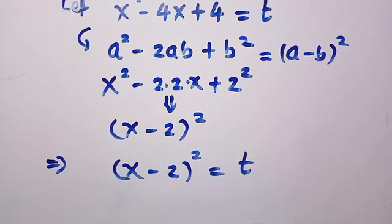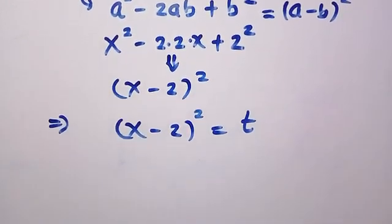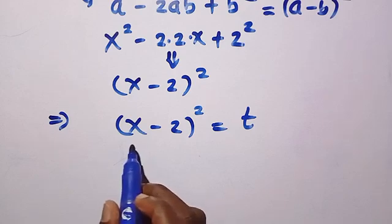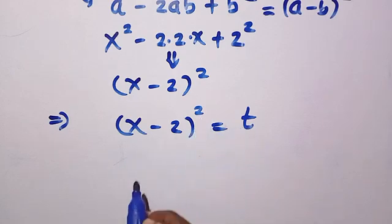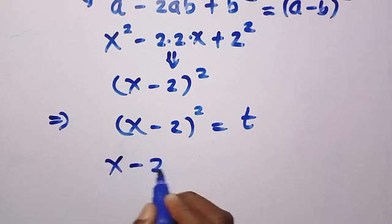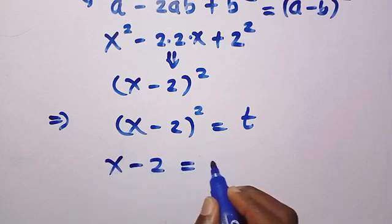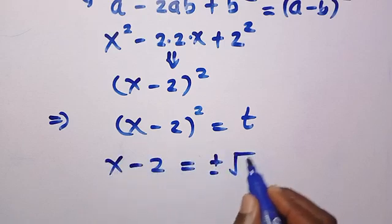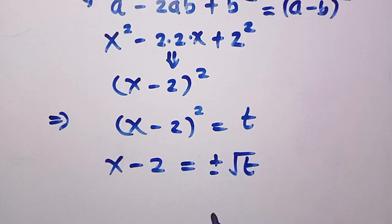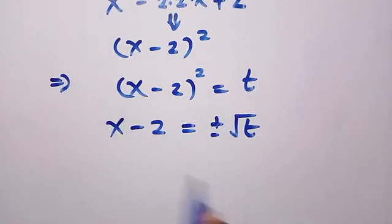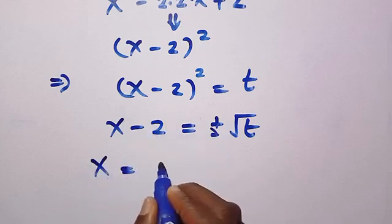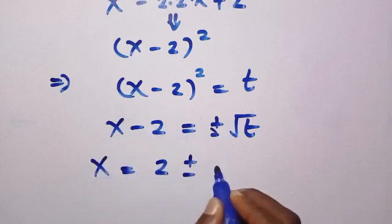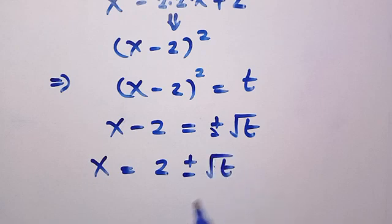I want to make x the subject of this formula. We have a square here, so by taking the square root of both sides we get x minus 2 equals plus or minus the square root of t, where t is greater than or equal to zero. Adding 2 to both sides gives x equals 2 plus or minus the square root of t.